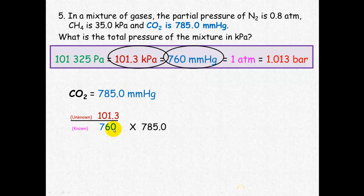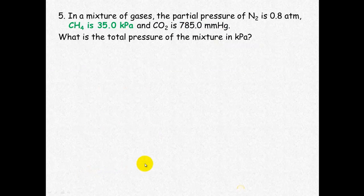So 101.3 divided by 760 times the information or the amount that we have which will equal 104.63 kilopascals. Now we know all of our pressures in kilopascals.